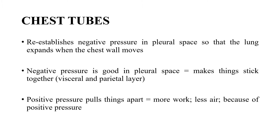So for chest tube, we need to know that in normal physiology the lung has a parietal layer and a visceral layer. The visceral layer is attached to the lung and the parietal layer is attached to the chest wall. Here we can see the parietal layer and visceral layer — two layers with a space in between called the pleural space.